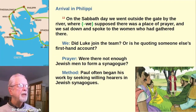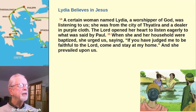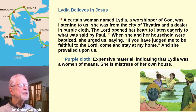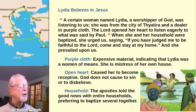Paul often began his work in a city by first seeking willing hearers in local Jewish synagogues. Read verses 14 and 15. Explain that purple cloth was an expensive material, indicating that Lydia was a woman of means — she was also mistress of her own house. God opened her heart, causing her to become receptive to the message of the Gospel. God, however, does not cause anyone to sin or to disbelieve. Lydia and her household got baptized. Apparently the apostles used to tell the good news to entire households, preferring to baptize several new believers together.